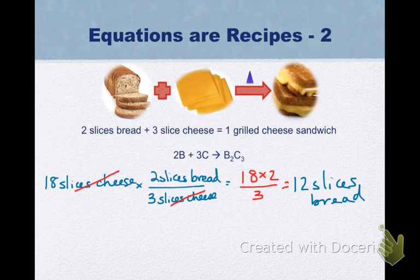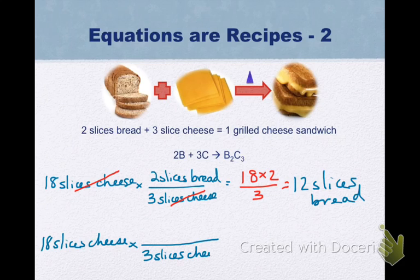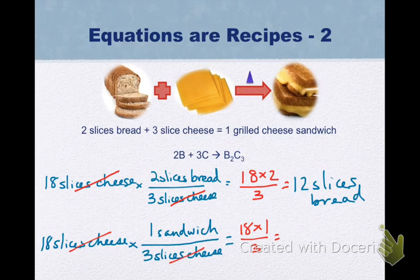Now let's also look at sandwiches. So 18 slices of cheese again. For 3 slices of cheese on top cancel slices of cheese on the bottom. Multiplying 18 times 1 divided by 3, which is how the math would work out, allows me to calculate that this time I can make 6 sandwiches.